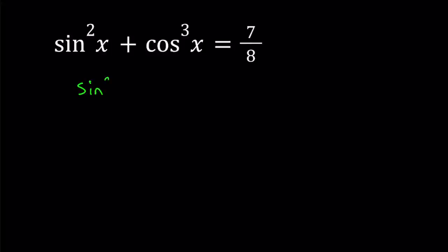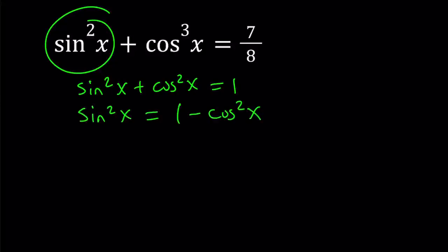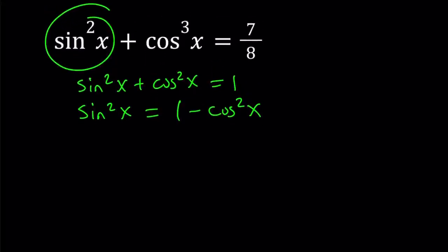It is sine squared x plus cosine squared x equals one. This is the most important identity in trigonometry, in my opinion. And this allows you to replace sine squared x with one minus cosine squared x, and that gives us a nicer equation. So let's go ahead and replace sine squared x with one minus cosine squared x and see what happens.